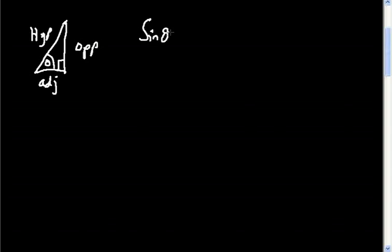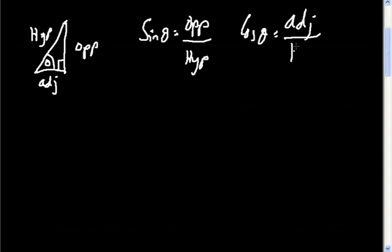Let's do a quick recap on what sine, tan, and cos are. Let me draw a right-angle triangle. I call this my right angle, so I'll choose this angle here — this becomes my opposite, this becomes my hypotenuse, and this becomes my adjacent. So: sine theta is opposite over hypotenuse, cos theta is adjacent over hypotenuse, and tan theta is opposite over adjacent.